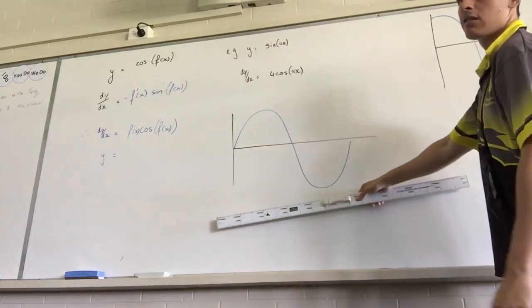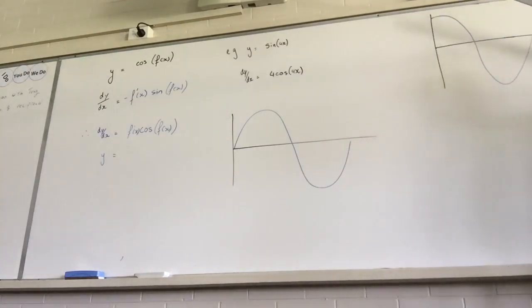After zero, what happens to my gradient? Goes up. Goes positive again. My cos function goes positive. Happy with that?